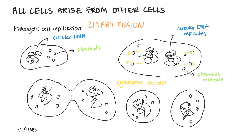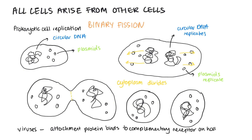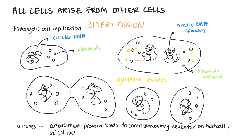Viruses are not cells — they're acellular and non-living — so they don't undergo cell division, binary fission, or mitosis. How they replicate is by using an attachment protein which binds to a complementary receptor protein on the surface of a host cell. For example, HIV's attachment protein is complementary to the receptor on the surface of T cells. This enables the virus to enter the cell, where it injects its nucleic acid, which may be DNA or RNA, single-stranded or double-stranded. The infected host cell then replicates the virus particles, essentially being hijacked to replicate the virus.